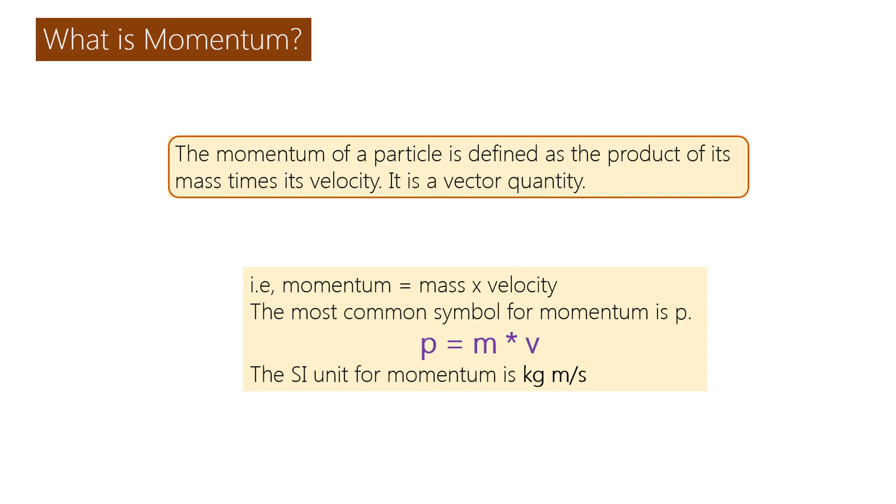That is, momentum is equal to mass into velocity. The most common symbol for momentum is P. P equals m into v. The SI unit of momentum is kg m per second.